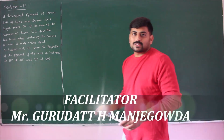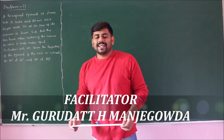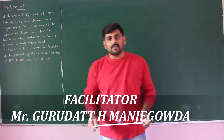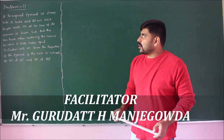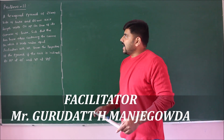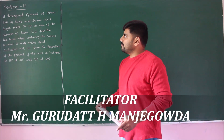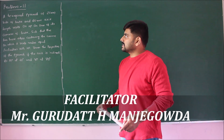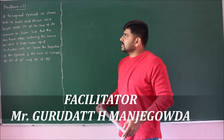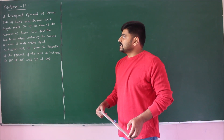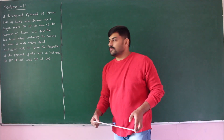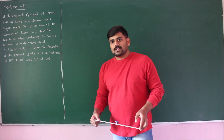Welcome, dear learners. In module 3 we were discussing orthographic projection of solids. Let us move on to problem number 11, which states that a hexagonal pyramid of 25 mm sides of base and 60 mm axis length rests on HP on one of its corners of the base, such that the two base edges containing that corner make equal inclination with HP.